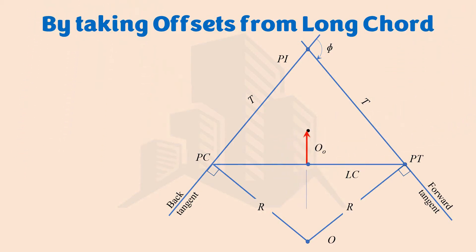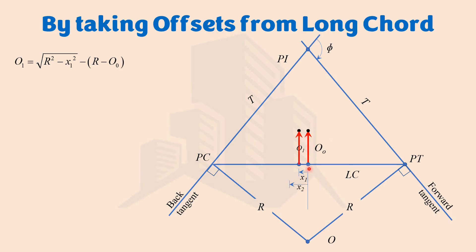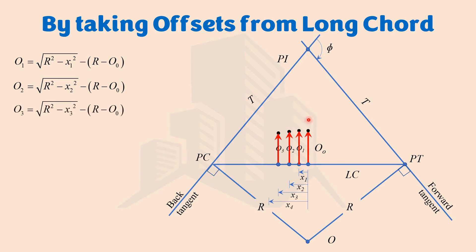For multiple points on the curve: at distance x1 from the mid, we use the formula with x1 to calculate offset O1. At distance x2, we use x2 to calculate O2. Similarly, we calculate O3 at x3, O4 at x4, and so on, with only the x value changing each time while everything else remains constant.